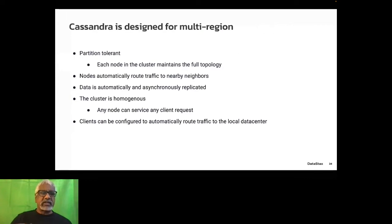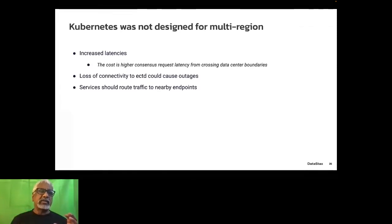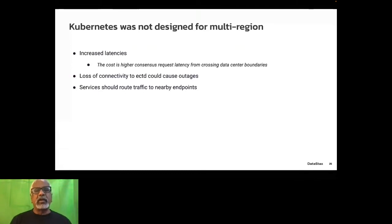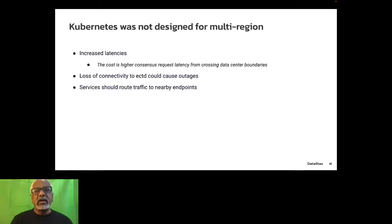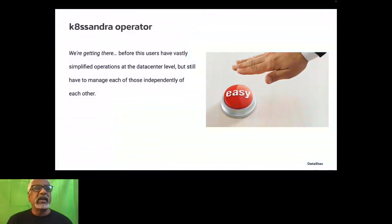Data is automatically and asynchronously replicated, and from a Cassandra perspective the cluster is very homogenous. Kubernetes, on the other hand, was not designed for multi-region — certain design decisions were consciously taken. The goal for Kubernetes was really as a platform for building platforms, not designed for multi-region. So how do you adapt Kubernetes for multi-cluster, multi-region, multi-cloud? That's what the K8ssandra operator does.